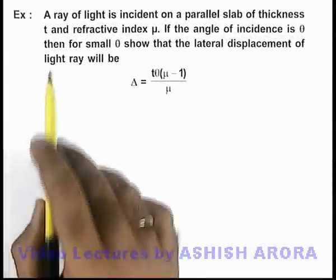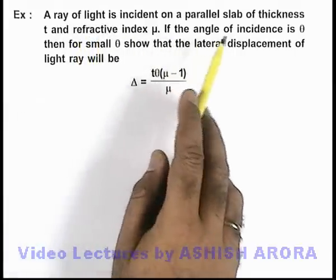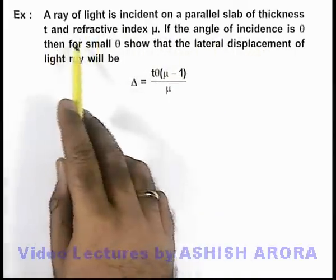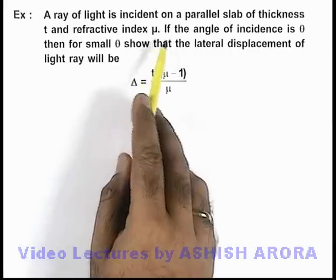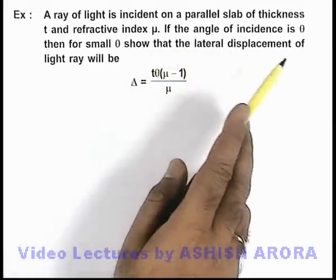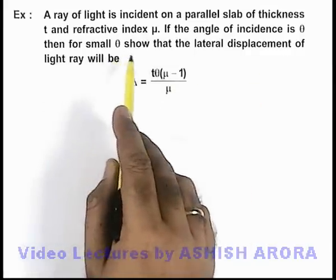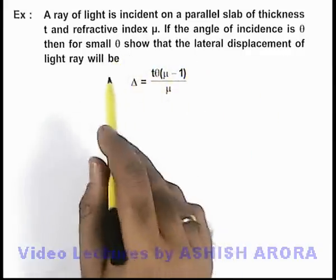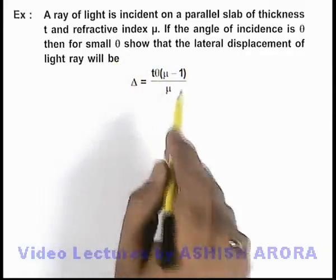In this example we are given that a ray of light is incident on a parallel slab of thickness t and refractive index μ. If the angle of incidence is θ, then for small θ we are required to show that the lateral displacement of light ray will be given by this expression.